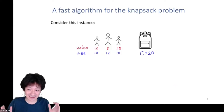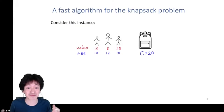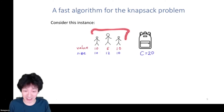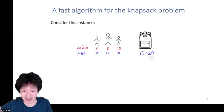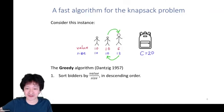Let me fix ideas with one specific instance before writing down a general model. We're thinking of a knapsack problem. There's a set of bidders — each bidder has a certain value for being put in the knapsack and a size representing the amount of space they take. There's a capacity for the knapsack; in this case, the knapsack can fit 20 units worth of bidder.